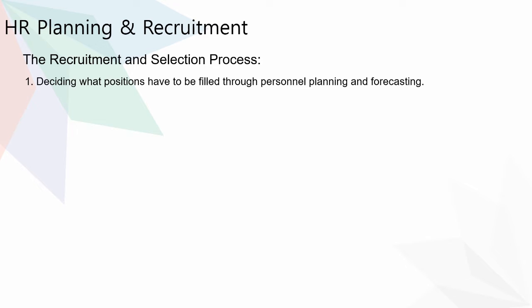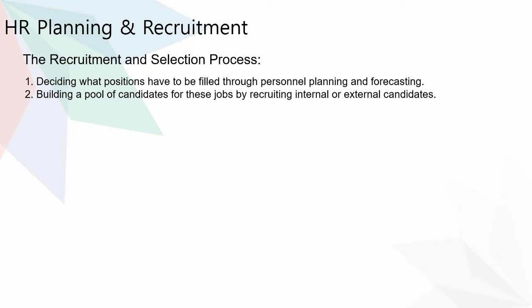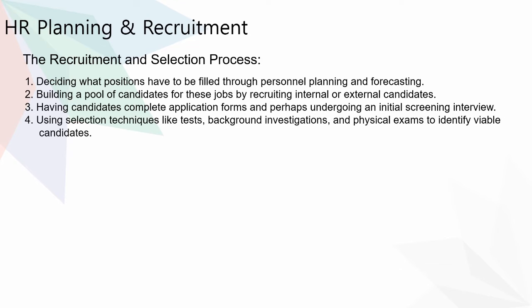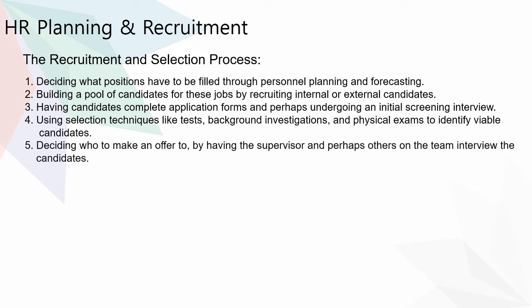Now coming to HR planning and recruitment. The recruitment and selection process consists of: deciding what positions have to be filled through personnel planning and forecasting; building a pool of candidates by recruiting internal or external candidates; having candidates complete application forms and perhaps undergo an initial screening interview; using selection techniques like tests, background investigations, and physical exams to identify viable candidates; and deciding who to make an offer to by having the supervisor and perhaps others on the team interview the candidates.